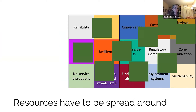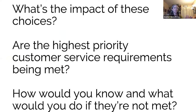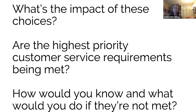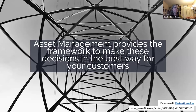The revenue doesn't always cover all of the things you want to do, so we have to spread our money around and make choices. We're going to do some things fully and some things partially, but we've got to make choices and think about the impact of those choices. Are we doing the highest priority customer service requirements? That's where asset management comes in — providing a framework and structure to make those decisions in the best way for the customers.